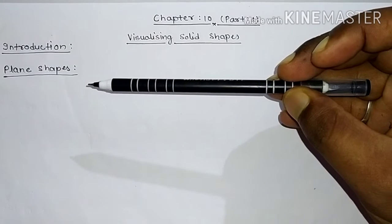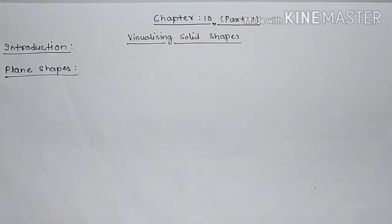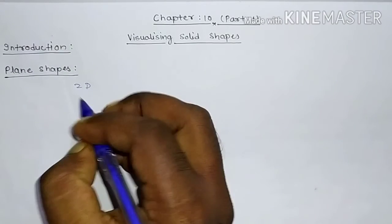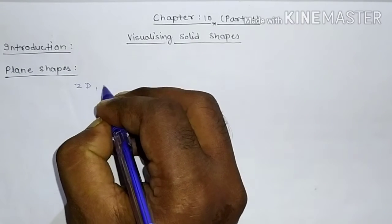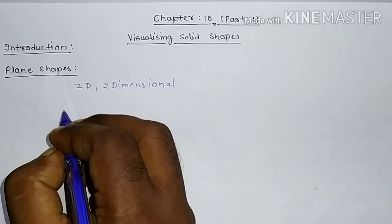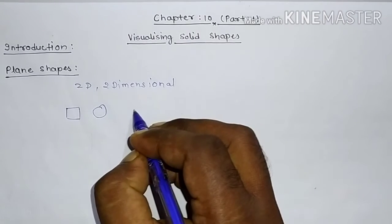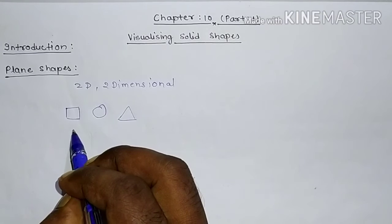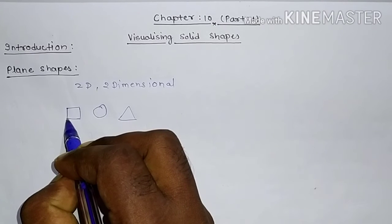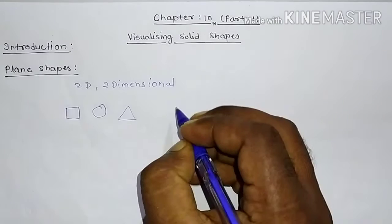The first topic is plane shapes. Simply, a plane shape is a shape which can be drawn on paper. 2D shapes are plane shapes — 2D means two-dimensional. Examples include square, circle, and triangle. These are two-dimensional shapes, and they exist on only two axes: x and y.